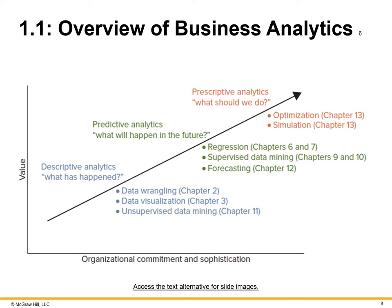Taking it a step further up the value chain of business analytics, we have predictive analytics — what will happen in the future? Future chapters will cover regression, supervised data mining, and forecasting as the next-level methods of predictive analytics, looking at patterns from historical trends to predict future trends. Then precisely, we get to prescriptive analytics — what should we do? True optimization and simulation are covered in chapter 13, and this illustrates how data can evolve from descriptive all the way to prescriptive in the value it drives for an organization.